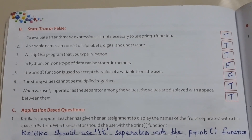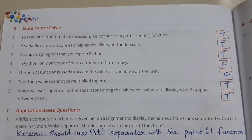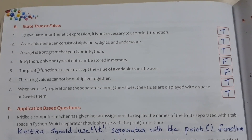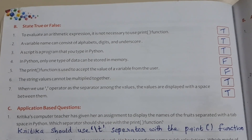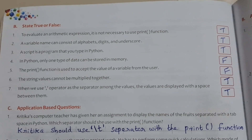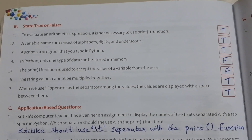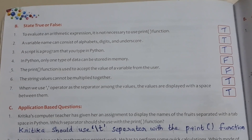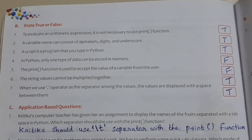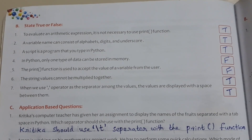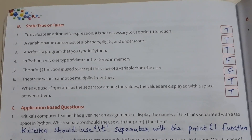Now, True or False. To evaluate an arithmetic expression, it is not necessary to use the print function. Answer is True. A variable name can consist of alphabet, digit and underscore. Answer is True. A script is a program that you type in Python. Answer is True. In Python, only one type of data can be stored in memory. Answer is False.